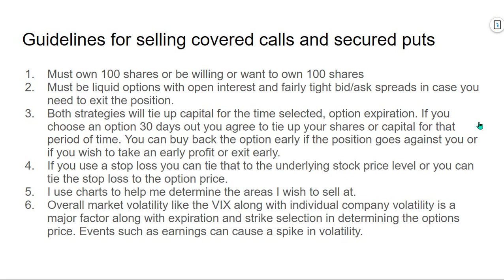If you use a stop loss, you can tie that stop loss to the underlying stock price level or to the option price. I personally prefer to tie my stop loss to the underlying price of the stock and use charts to help me determine the areas I wish to buy or sell at. Overall market volatility like the VIX index, along with individual company volatility, is a major factor along with the expiration date and the strike selection in determining the options price. Events such as earnings can cause a spike in volatility, so just be aware of that.